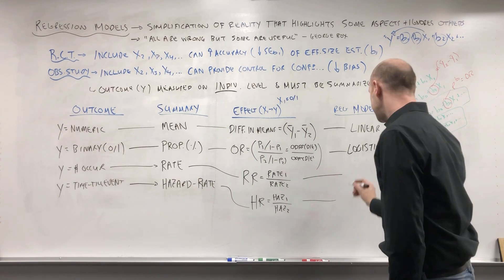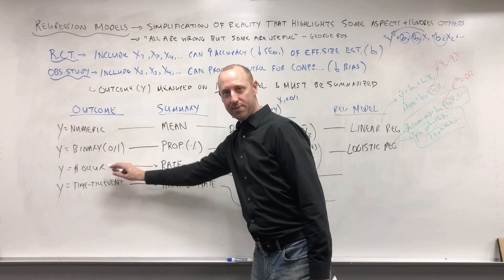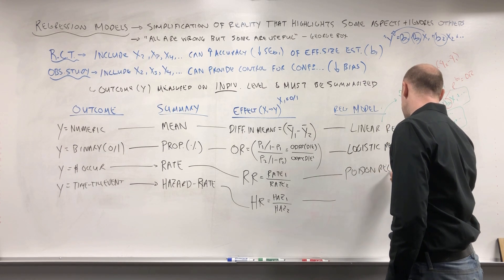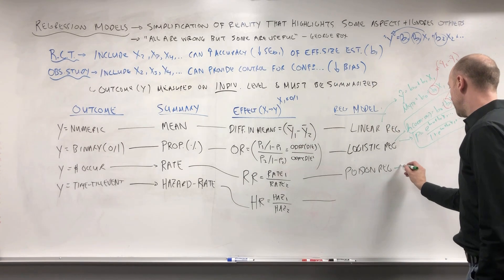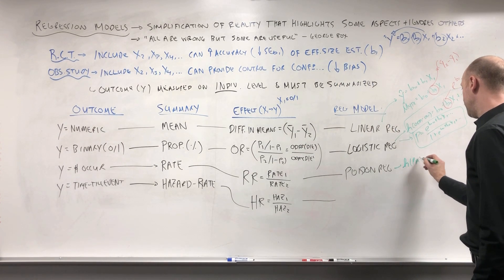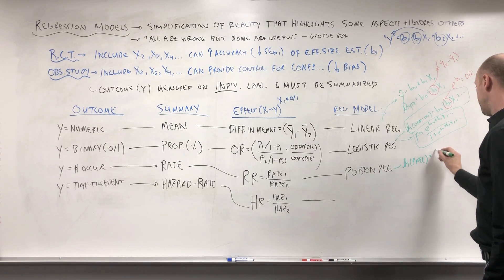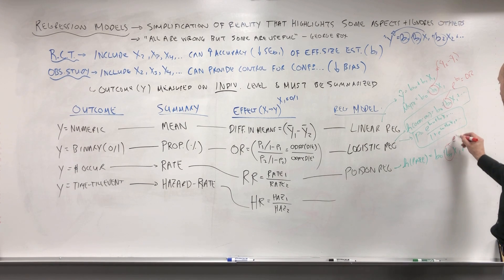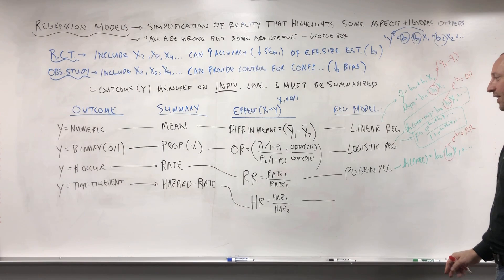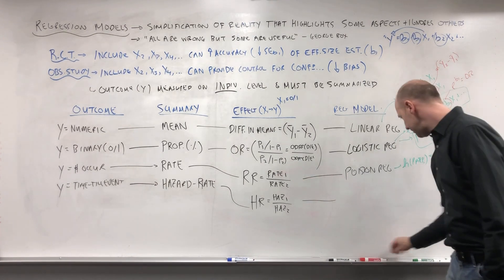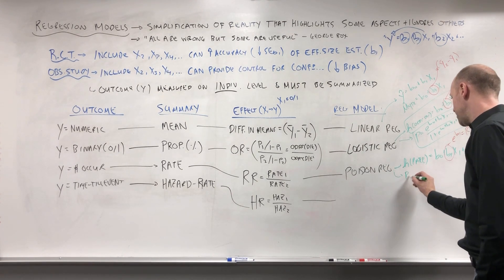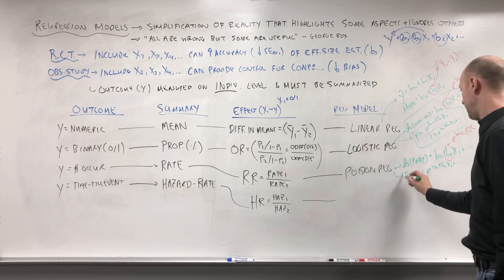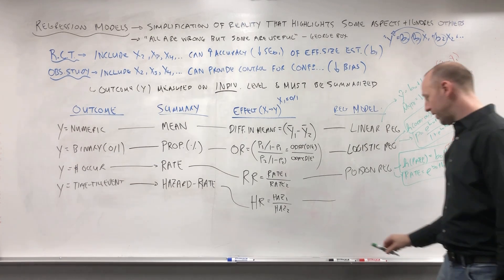When we have outcomes that are the number of times some event occurs, we can summarize those with a rate and use Poisson regression. In Poisson regression, we model the log rate as a linear function of the x's, and if we exponentiate this coefficient it gives us a rate ratio — something learned in intro stats. We can also think of Poisson regression as modeling the rate using an exponential function: e^(b0 + b1*x1) and so on. We'll talk all about this when we get to Poisson regression.